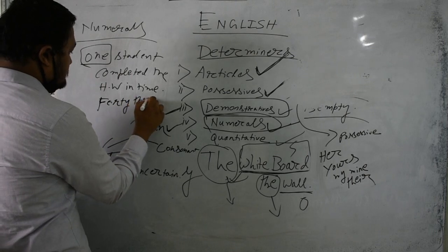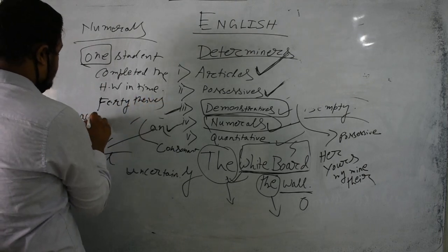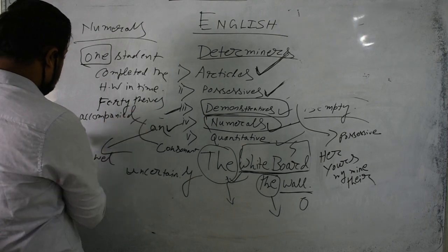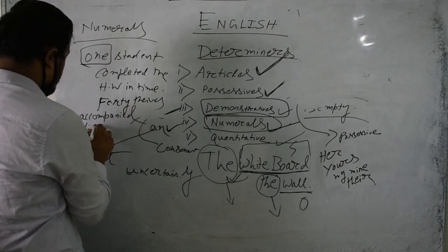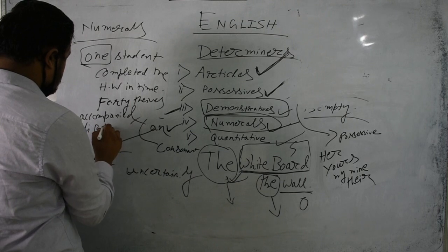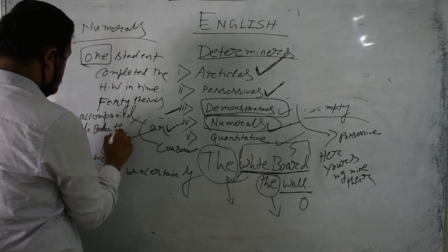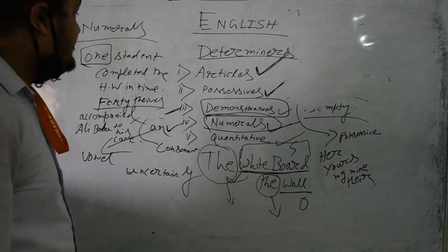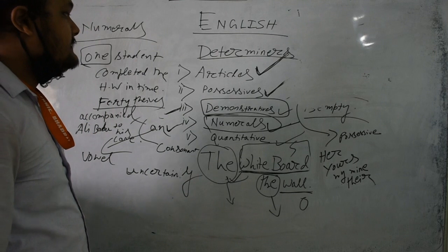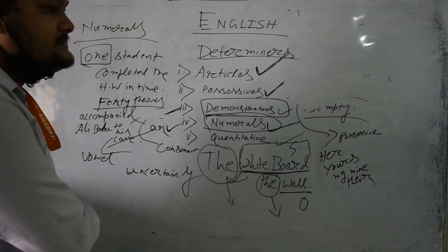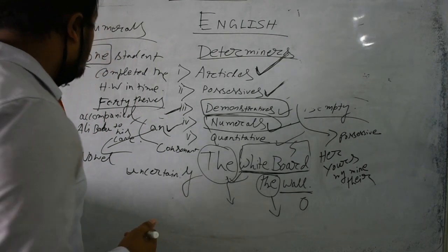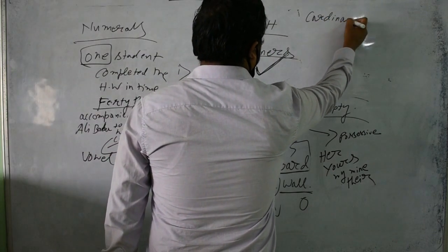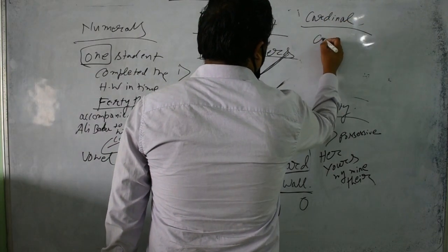Similarly, we can say: 'Forty thieves accompanied Alibaba to his cave.' Here we know how many thieves — forty. Numerals are divided into two types: the first is called cardinal numbers, and the second is ordinal.